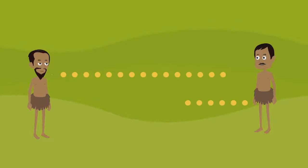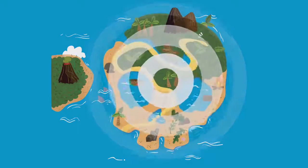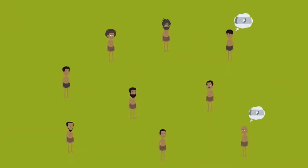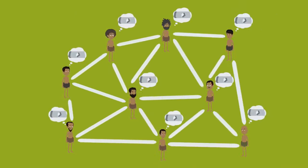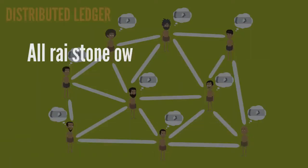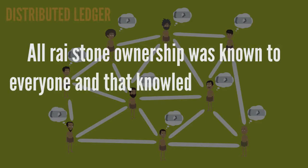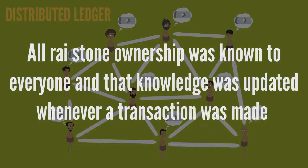Every time any Yapese conducted a trade, an announcement was made to the entire tribe. Each member of the tribe would then update their mental ledger. In today's description, this would be called a distributed ledger — all rye stone ownership was known to everyone and updated whenever a transaction was made.